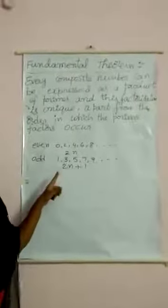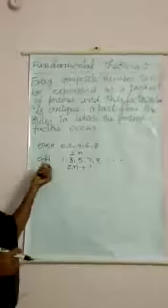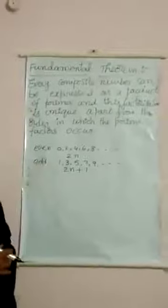You may say 0 also belongs to odd numbers, but from this general formula we cannot say that 0 belongs to odd numbers. Because if we substitute N = 0, we get 2×0 + 1 = 1, which is an odd number, not 0.